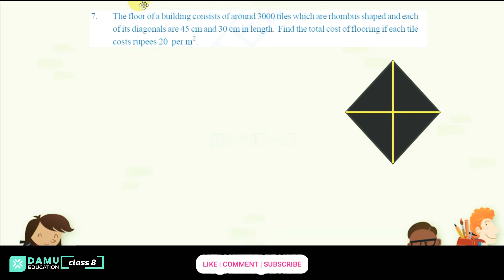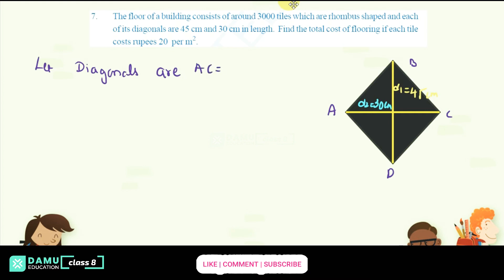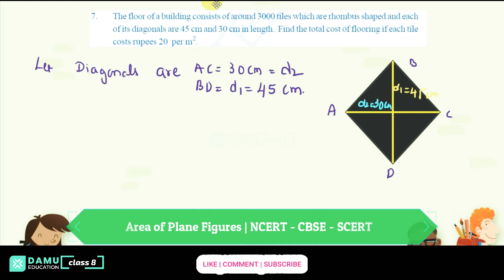First, draw a rhombus like this. The diagonals are 45 centimeter and 30 centimeter. Let d1 be equal to 45 centimeter and d2 be equal to 30 centimeter. Label the rhombus as ABCD, so diagonal AC will be equal to 30 centimeter (that is d2), and diagonal BD will be equal to d1, which is 45 centimeter.